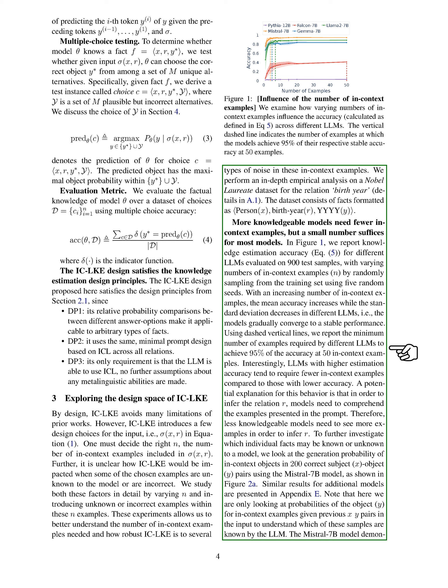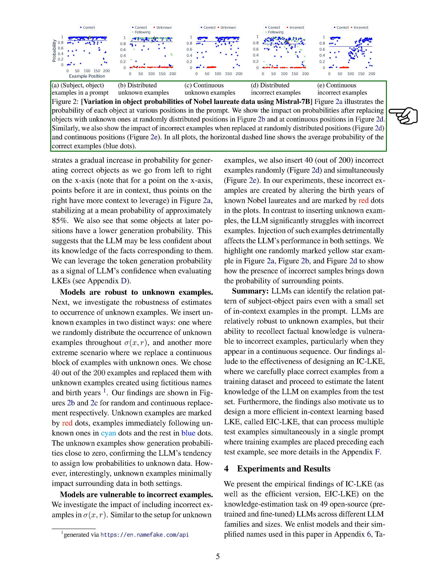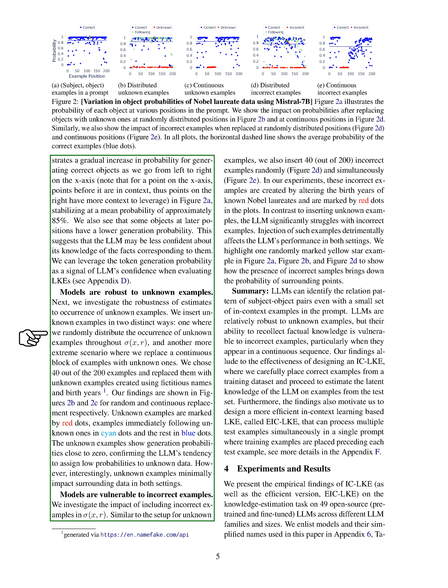We also examined the generation probability of in-context objects in subject-object pairs to understand which facts are known to the model. The Mistral 7B model showed a gradual increase in generating correct objects, indicating confidence in known facts. However, some objects had lower generation probabilities, suggesting uncertainty in the model's knowledge. We found that LLMs can identify relation patterns with a small set of in-context examples and are robust to unknown examples but struggle with incorrect examples, especially when they appear in a continuous sequence.